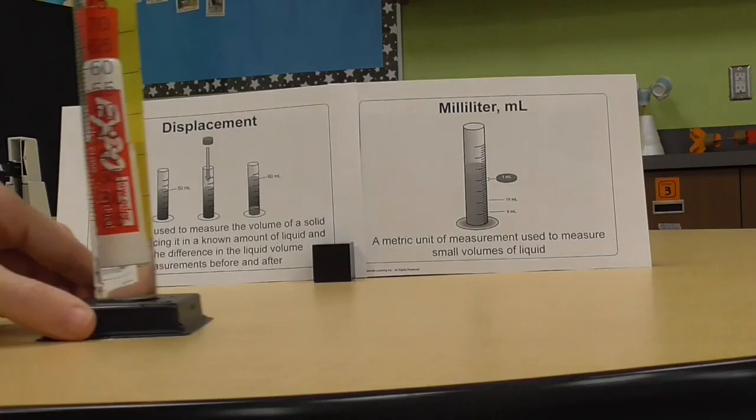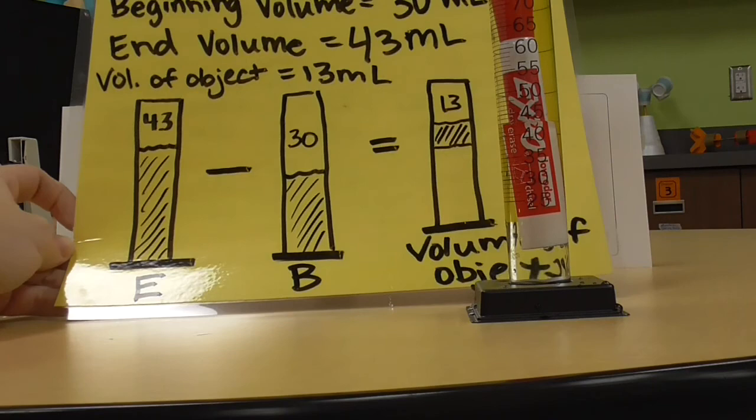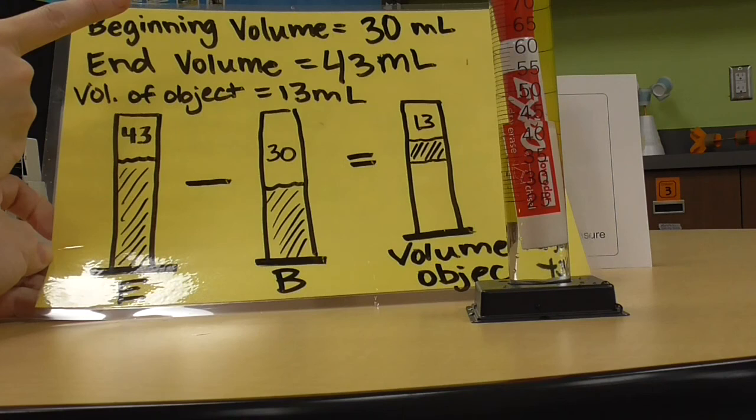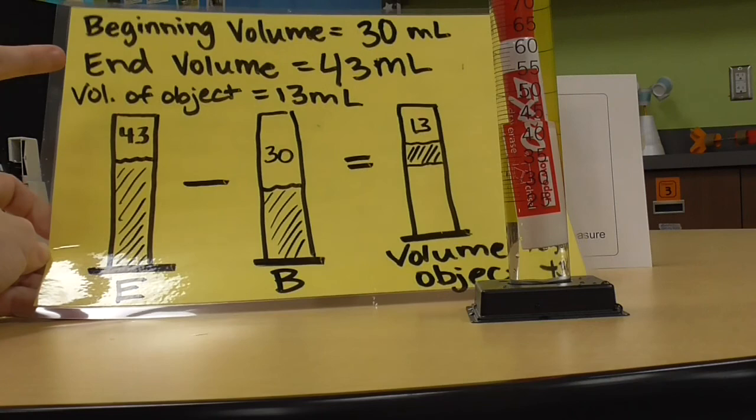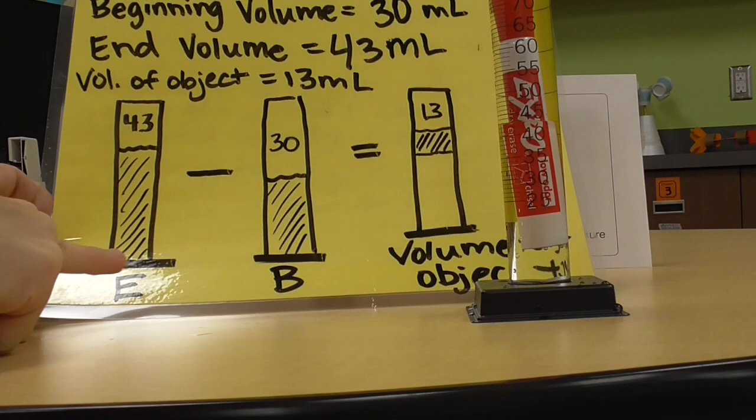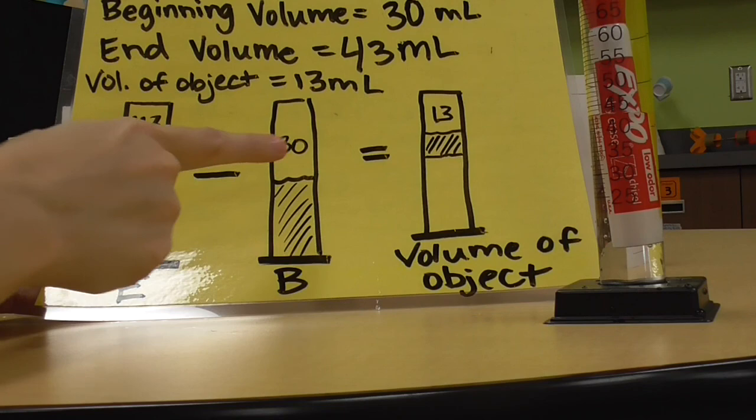So to figure out the volume of our marker, you need to know what to do. There's a little bit of a formula that you're going to need to know. First, you're going to need to know the beginning volume. And we started at 30 milliliters. Then we ended our volume at 43 milliliters. As you can see over here, it's 43. So we do some subtraction. We take what we ended with, we subtract what we began with. And then we end up with the volume of our object. So in our case, it's 43 minus 30, and you get 13. And that's the volume of the marker.